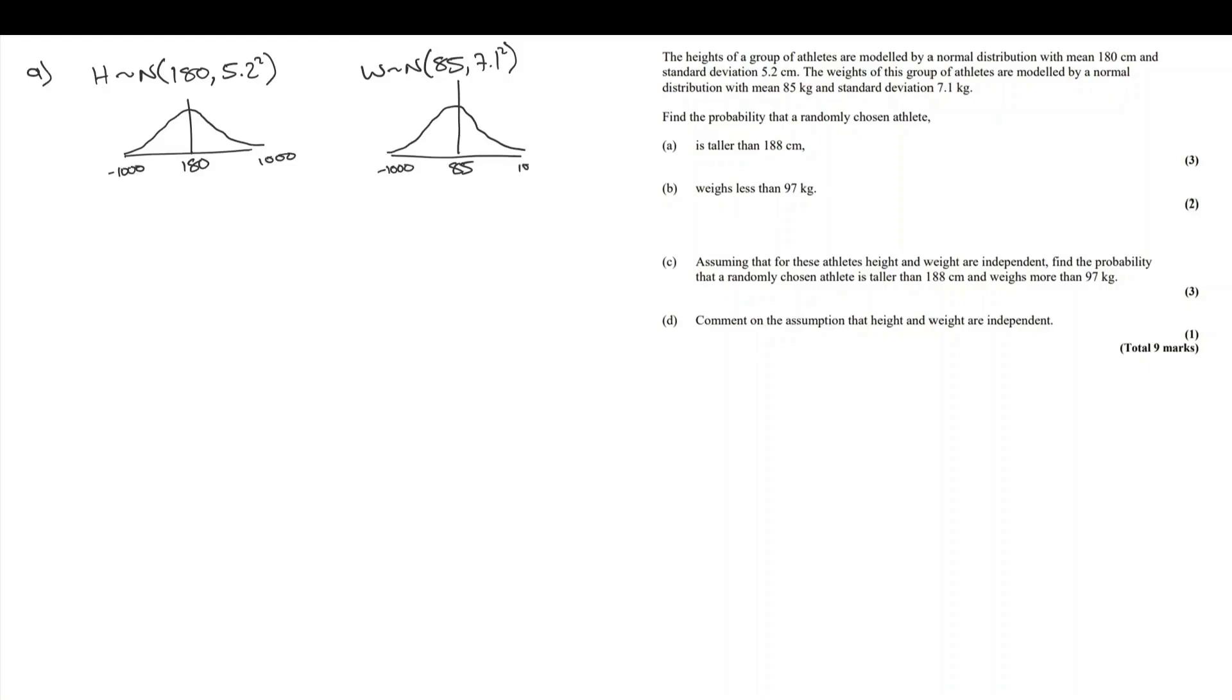I'm just going to add in the arbitrarily large and small limits. Now, let's find these probabilities. The probability that the height is greater than 188 means the person is quite tall. And 188 is over here on the right-hand side. I already know I'm looking for a small probability, something smaller than 50%.